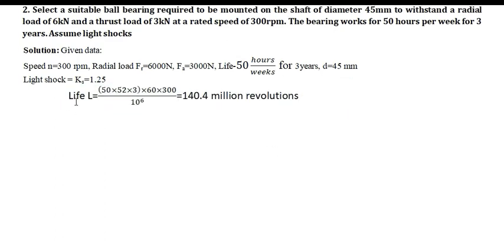This is the life we are going to find out. 50 hours, 50 into 52 into 3 years, 60 into 300. The n value is given here, 300 into 10 raise to 6, in terms of converting into million revolution. This is the answer we have obtained, 140.4 million revolution life.